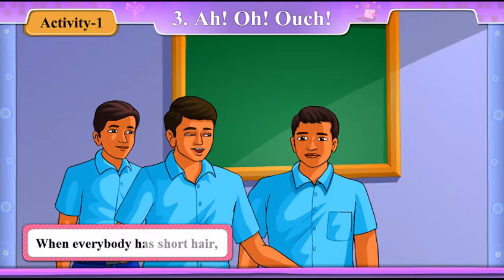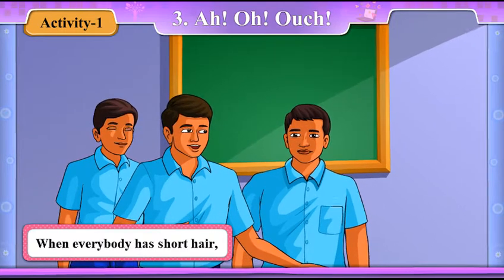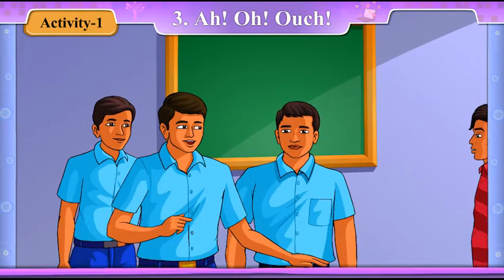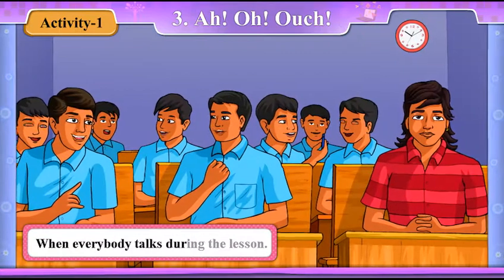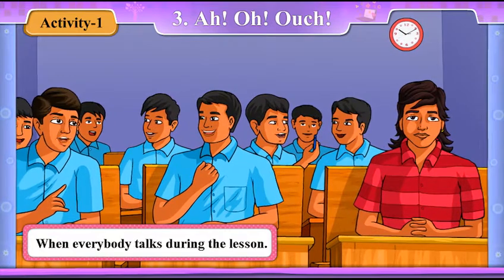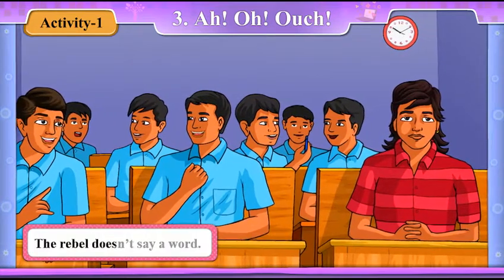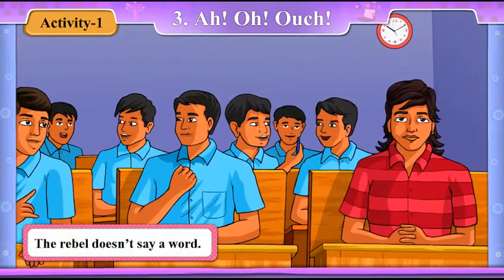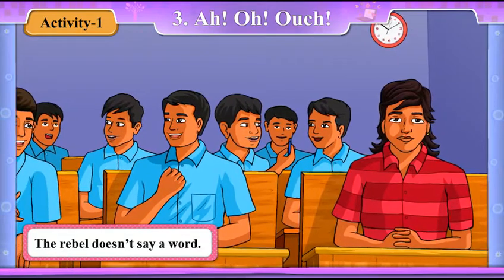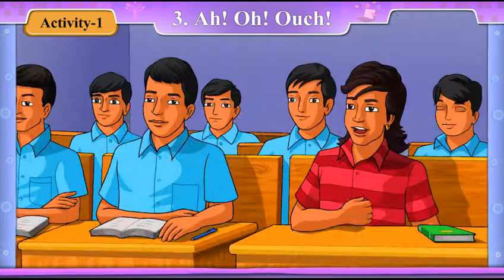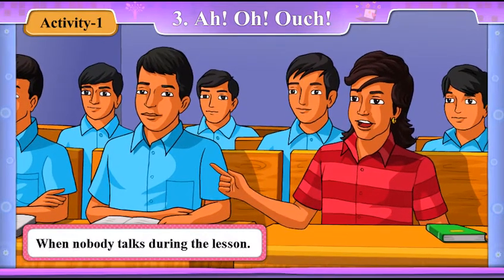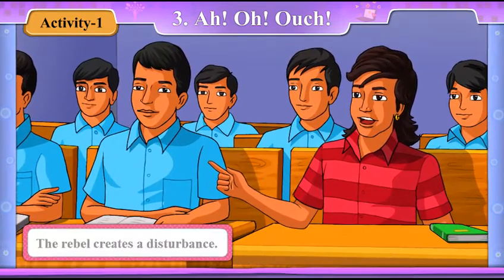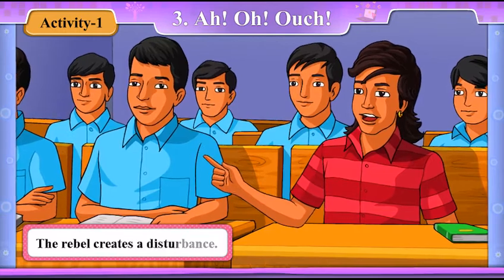When everybody has short hair, the rebel lets his hair grow long. When everybody talks during the lesson, the rebel doesn't say a word. When nobody talks during the lesson, the rebel creates disturbance.